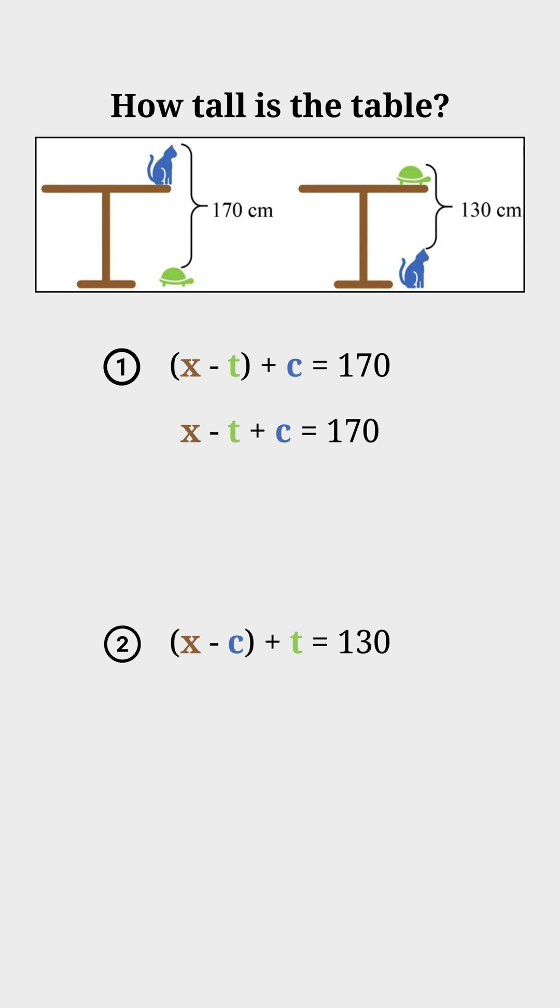Let's remove the brackets. Subtract both sides by X to bring the X to the right hand side. Then divide the entire equation by minus 1 to get T minus C equal to something.